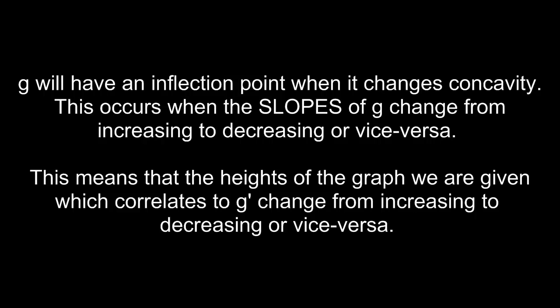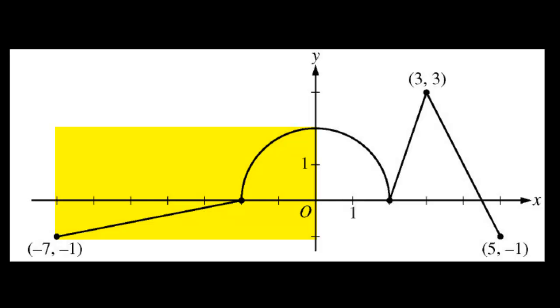Now in part B, we're looking for the x values for which g has inflection points. So g will have inflection points when it changes concavity. This occurs when the slopes of g change from increasing to decreasing or vice versa. In other words, this means that the heights of the graph that we're given, which correlates to g prime, when those heights change from increasing to decreasing or vice versa. So here we see g prime of x increasing, and then at x equals 0, g prime of x turns to decreasing. Therefore, my original function g had to have an inflection point at x equals 0.